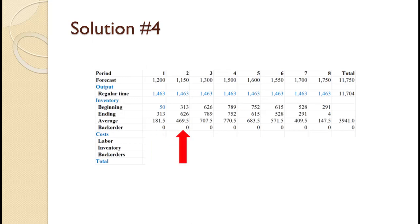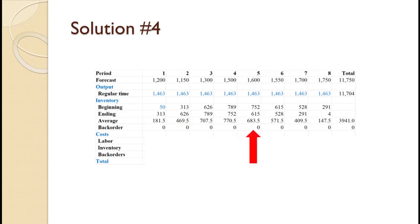For period 2, we need 1,150 but produce 1,463 so inventory goes up from 313 to 626 for an average of 469.5. For period 3, we need 1,300 but produce 1,463 so inventory goes up from 626 to 789 for an average inventory of 707.5. For period 4, we need 1,500 but only produce 1,463 so inventory drops from 789 to 752 for an average inventory of 770.5. For period 5, we need 1,600 but produce only 1,463 so inventory drops from 752 to 615 for an average inventory of 683.5. For period 6, we need 1,500 but produce only 1,463 so inventory drops from 615 to 528 for an average inventory of 571.5.